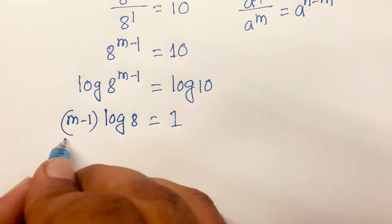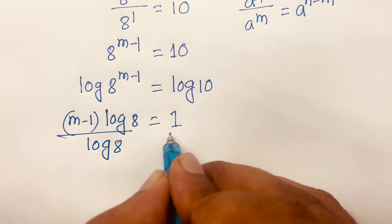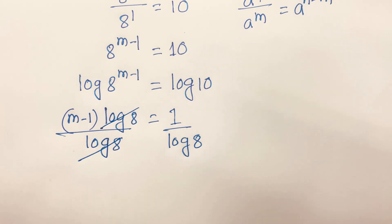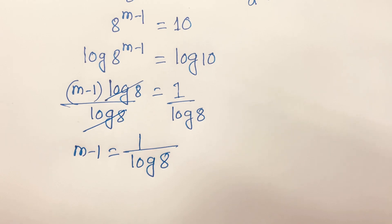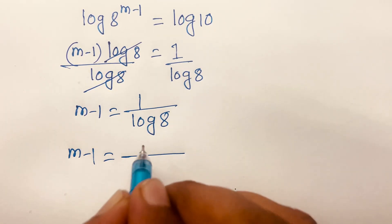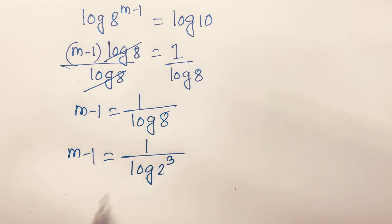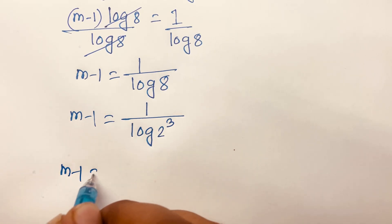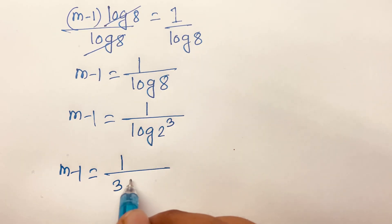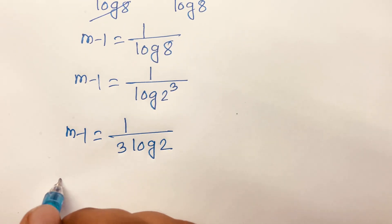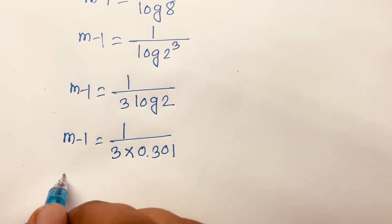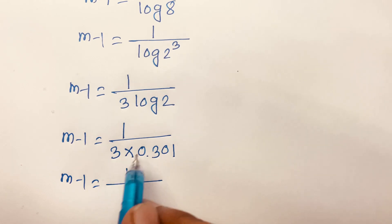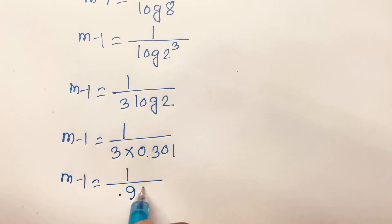Log 10 equals 1. Dividing both sides by log 8, log 8 cancels, so m minus 1 is equal to 1 over log 8. Since 8 is equal to 2 to the power 3, this becomes m minus 1 is equal to 1 over 3 times log 2. Substituting log 2 equals 0.301, we get m minus 1 is equal to 1 over 3 times 0.301, which equals 1 over 0.903.